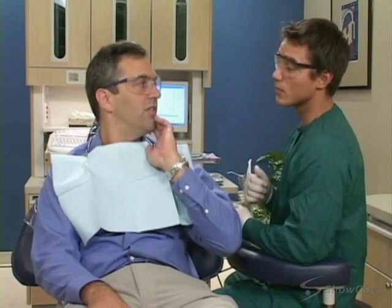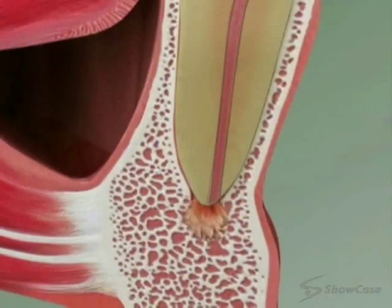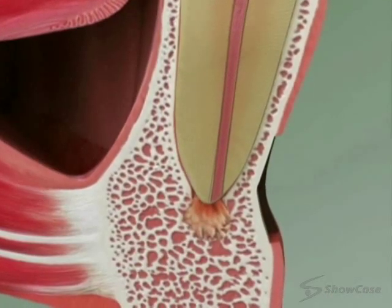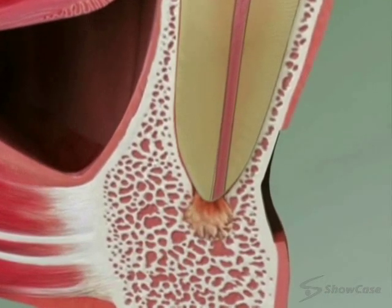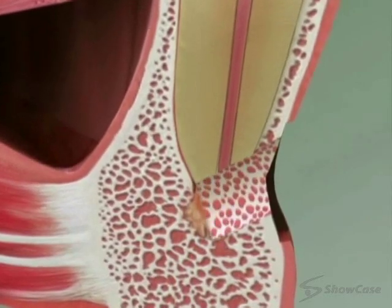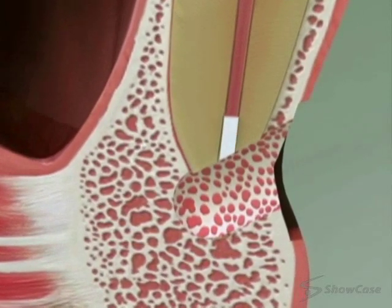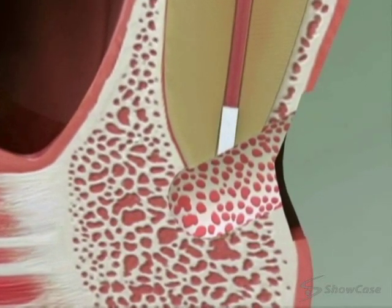We start the procedure by numbing the area to make you comfortable. Next, we make a small incision in the gums. We remove the infected tissue and then seal the end of the root.